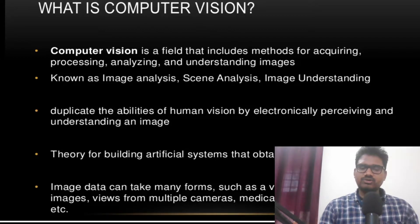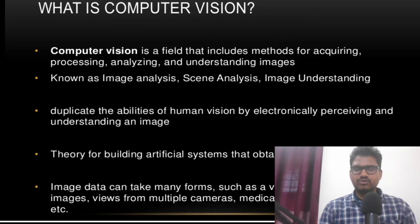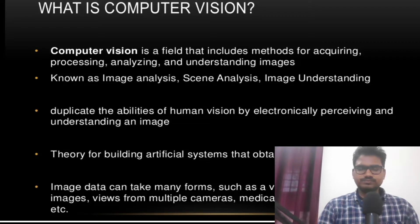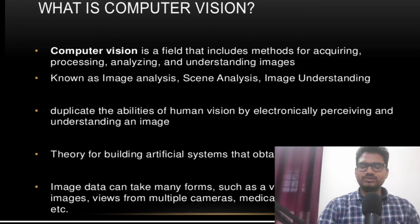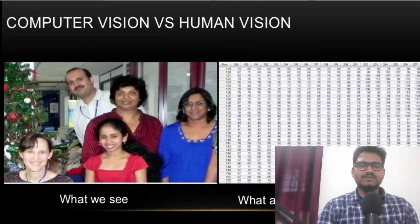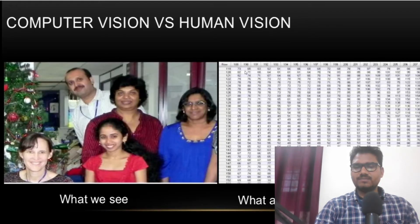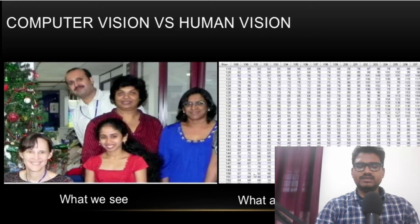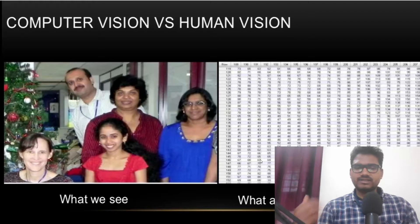Computer vision works on image data, and images can come in many forms — video sequences (which are collections of images), depth images, views from multiple cameras, medical scanners, satellite sensors, etc. When we look at an image we see the picture, but what the computer sees is an array of data — all numbers. The computer analyzes these numbers and recognizes, for example, that this is a collection of people, how many people are there, or detects and recognizes faces.